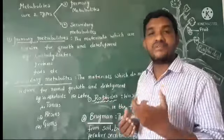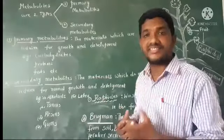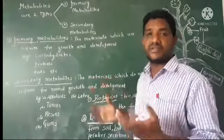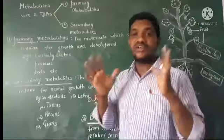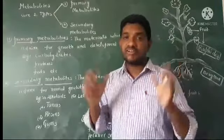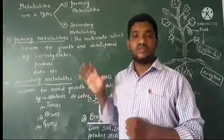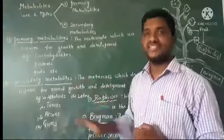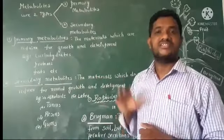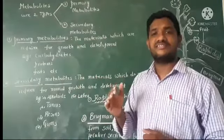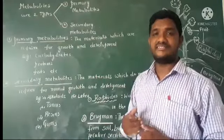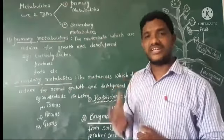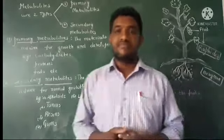Some biochemical substances are not required for normal growth and development, and do not involve in growth and development. Those are called secondary metabolites. Examples include alkaloids, tannins, resins, gums, latex, etc.